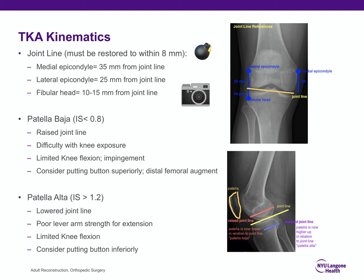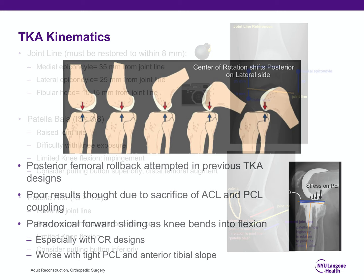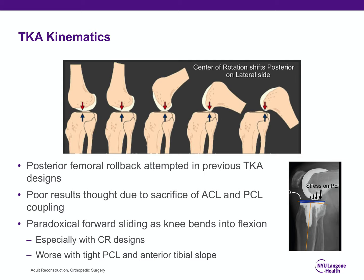With patella baja, consider placing the patellar button superiorly or adding a distal femoral augment to lower the joint line. With patella alta, you've lowered the joint line and will have poor lever arm for extension strength — consider placing the button inferiorly. Paradoxical rollback in TKA — particularly with CR designs — means the femur actually slides anteriorly on the tibia rather than rolling posteriorly, due to ACL sacrifice uncoupling the ACL-PCL link.